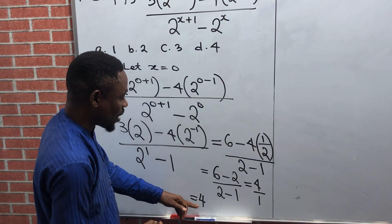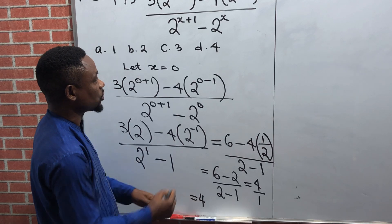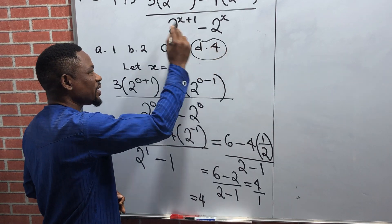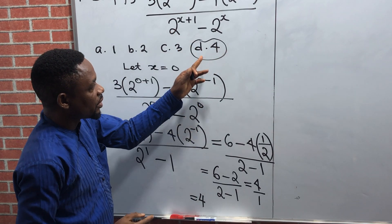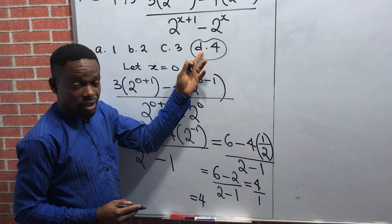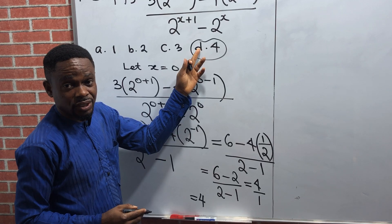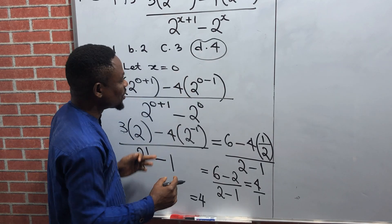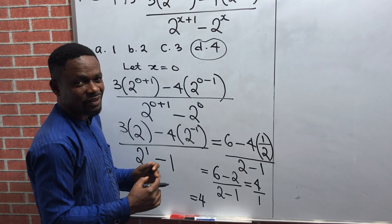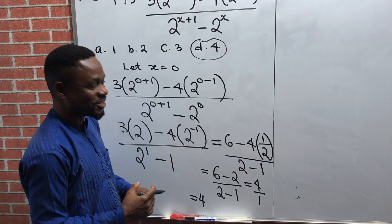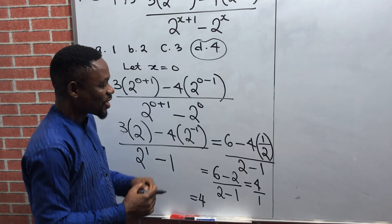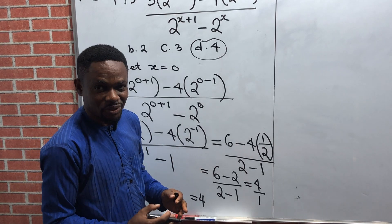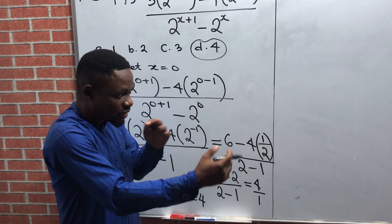Now the question is: do we have four in the options? Yes, we have it. So the correct answer in the option is option D. Now this is just the shortcut. Having identified the shortcut, can we now move to the normal method of solving this problem? Let's compare the two and know whether the answer will give us the same result.